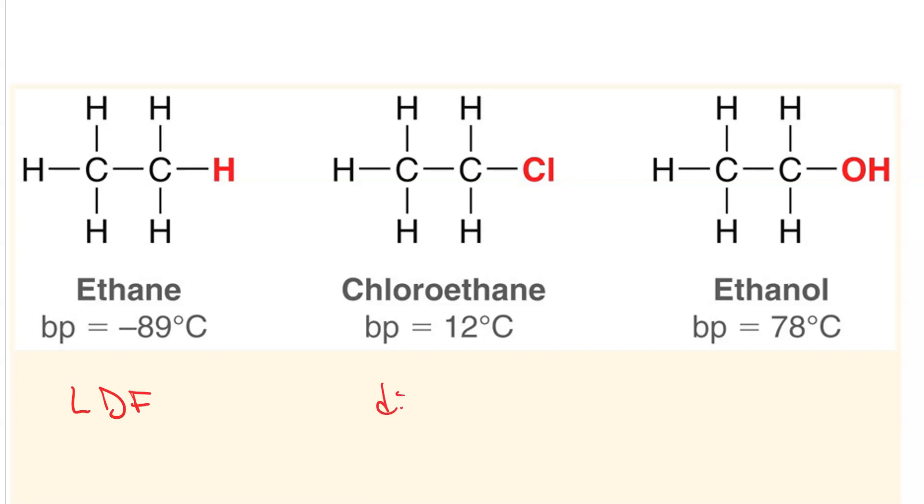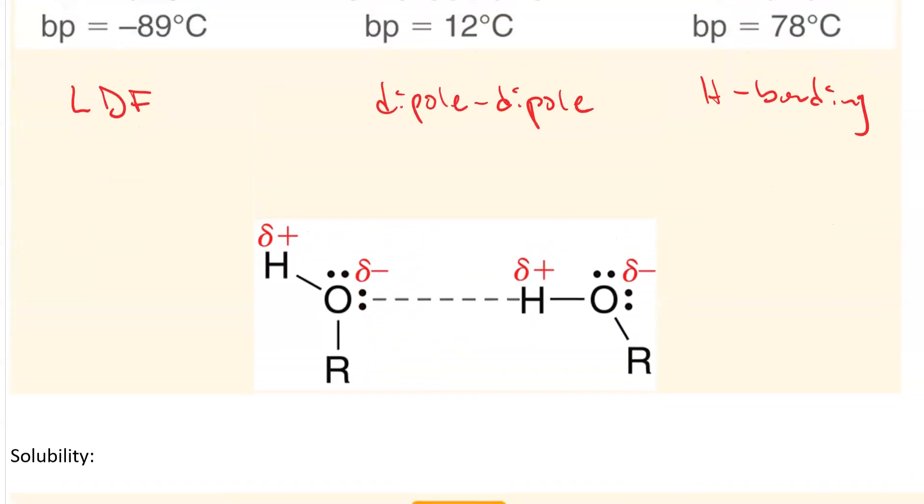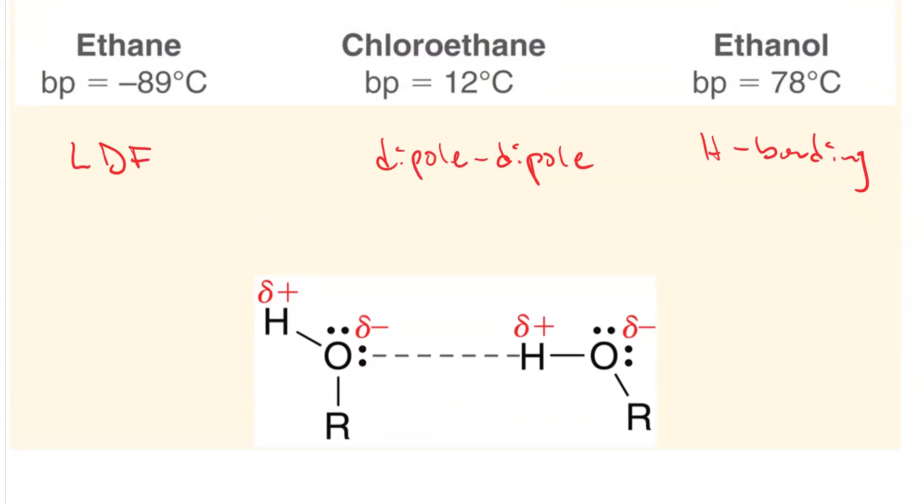Chloroethane has dipole-dipole interactions because it's a polar molecule. But ethanol can do hydrogen bonding, right? So it's the strength of hydrogen bonding, like so. So that gives you a high boiling point. And then, of course, the other principle here is solubility.